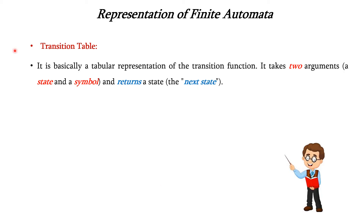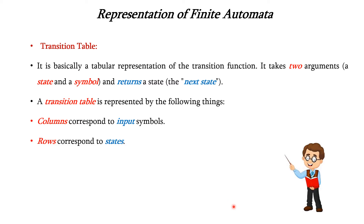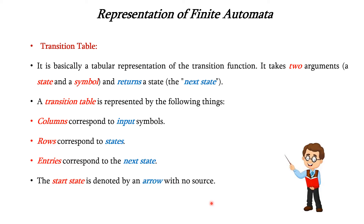Now we will see about the transition table. It is a tabular representation of the transition function. It takes two arguments — a state and a symbol — and returns the next state, where the symbol is the input. Columns represent the input symbols, rows represent the states, and entries correspond to the next state. The start state is denoted by an arrow with no source and the accept state is denoted by a star.